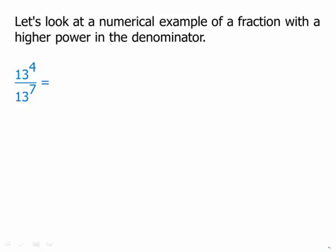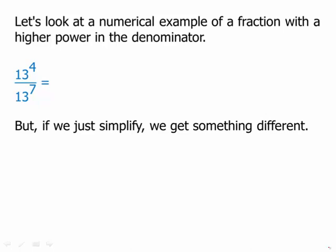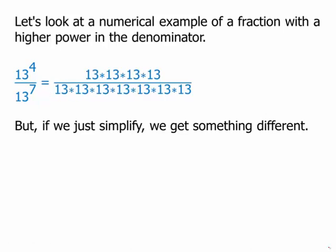Now let's think of this in terms of the fundamental definition of an exponent. 13 to the 4 means we're multiplying four factors of 13 together and similarly in the denominator we'd have seven factors of 13 multiplied together. We're going to cancel four of those factors of 13 in the numerator and denominator. When we cancel we're going to be left with 1 in the numerator and three factors of 13 in the denominator, which would be 1 over 13 cubed.